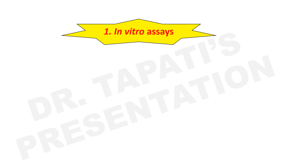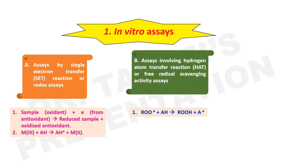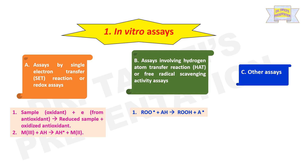In vitro assay methods can be classified into three groups. First is assays by single electron transfer reaction, or redox assays. Second is assays involving hydrogen atom transfer reaction, or free radical scavenging activity assays. And third is other different assays.